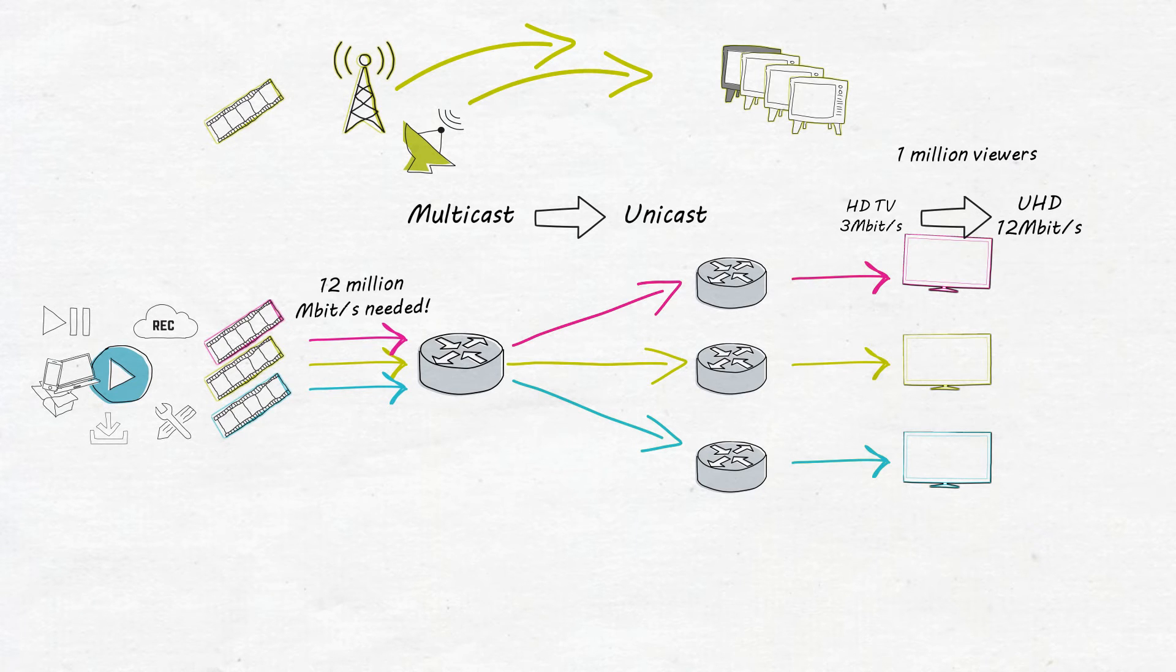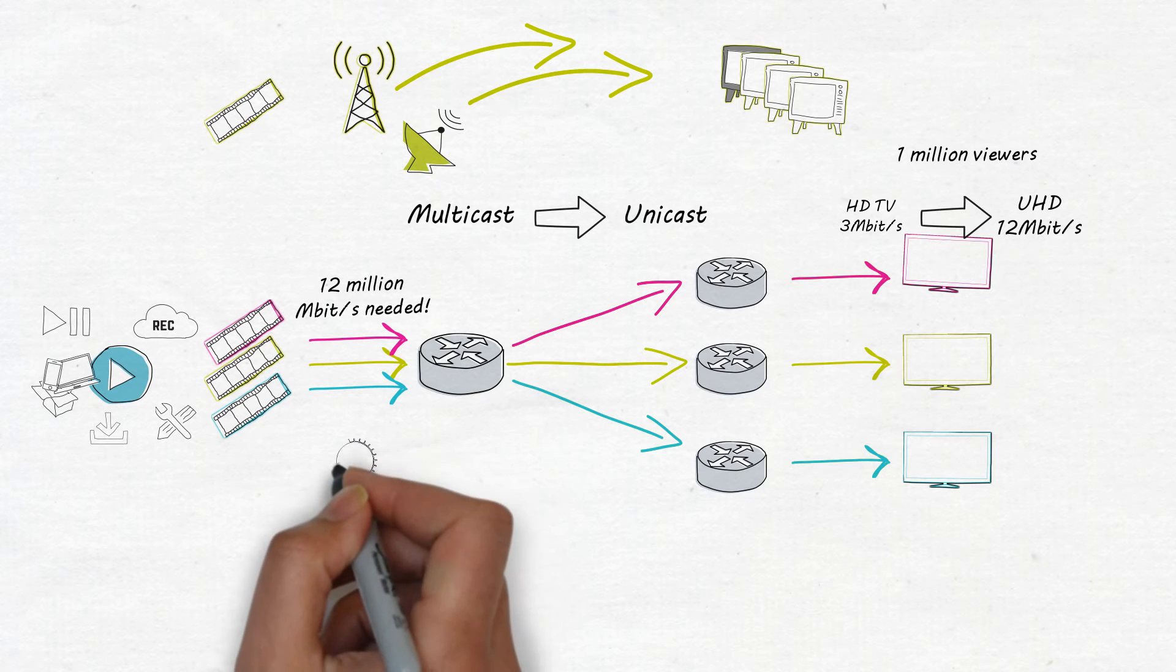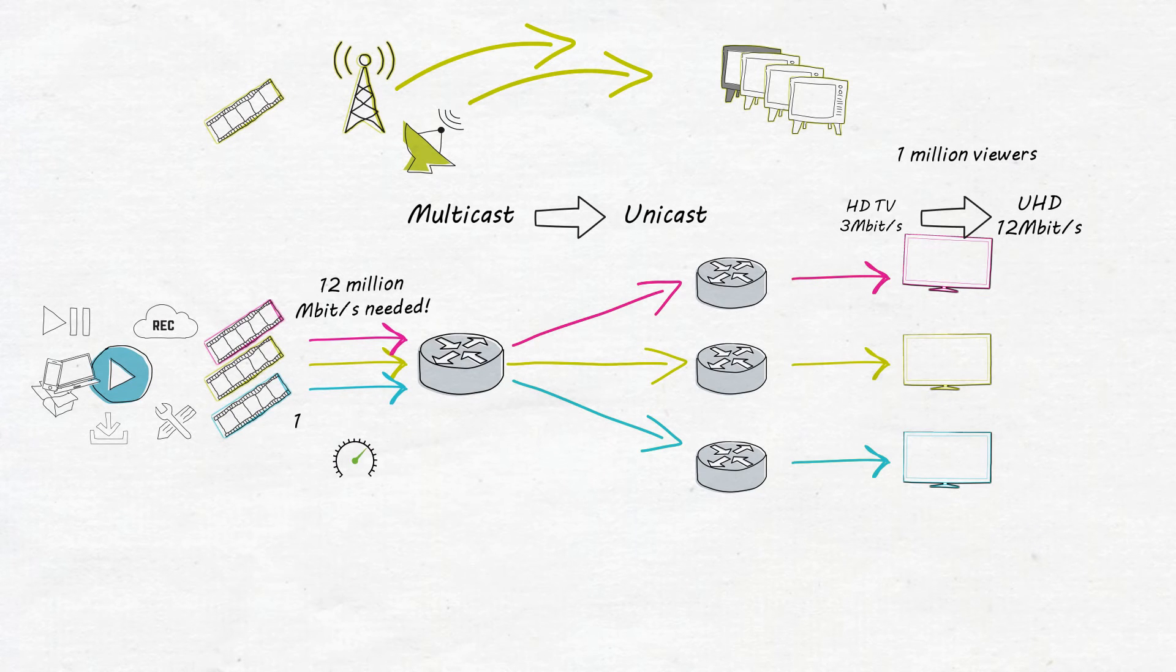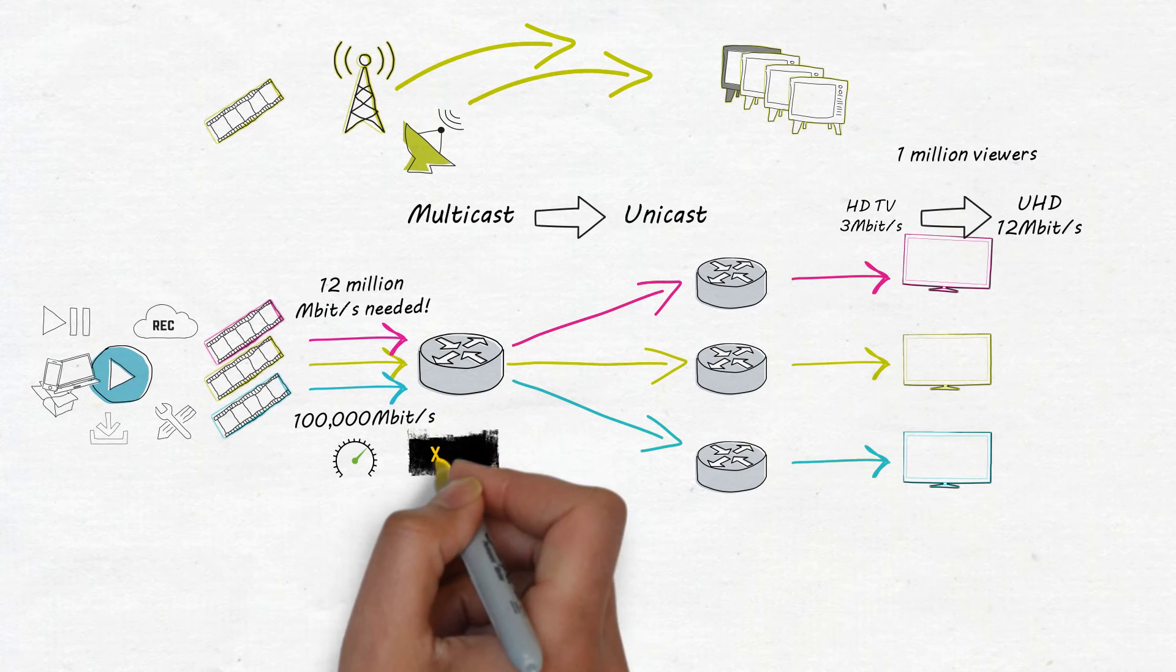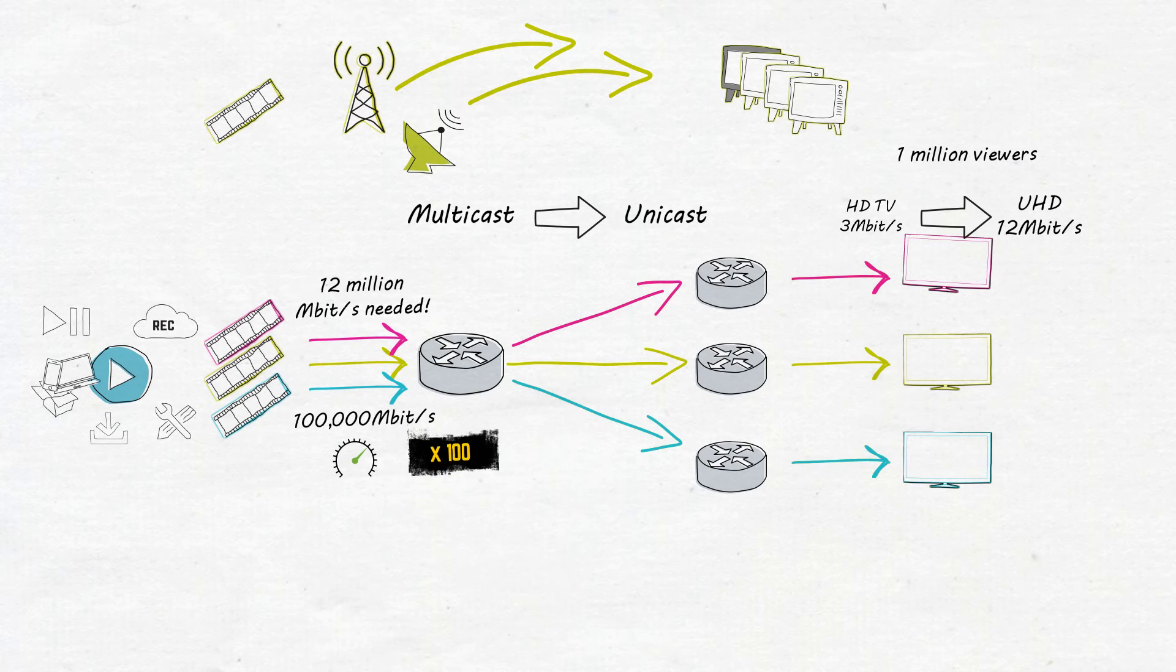Even the fastest fiber optic links that deliver internet traffic usually only run at 100,000 megabits. So we'll need over 100 times more capacity than the fastest links in the internet just for one reasonably popular show. It simply won't work. So how do we solve this problem?